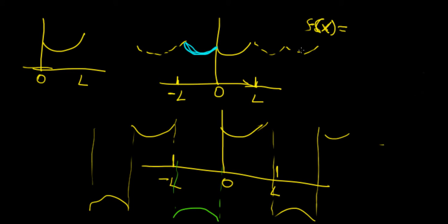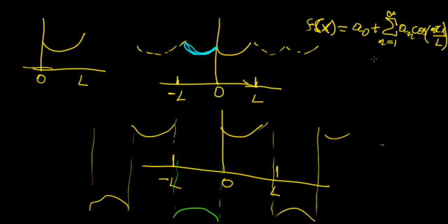If we choose an even series we're going to have a Fourier cosine series: a₀ plus the sum of aₙ cosine(nπx/L). Because for an even function, the bₙ coefficient is just going to be zero.